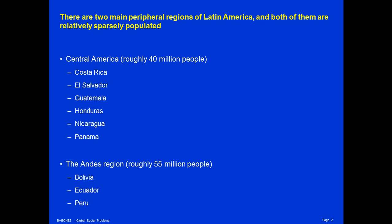A third peripheral region of the Americas may be constituted by the poor islands of the Caribbean, but since these are individual islands, each with a very distinctive history, and except for Haiti with relatively small populations, I'm not going to cover them in this lecture.